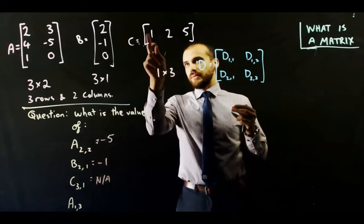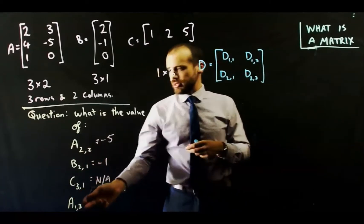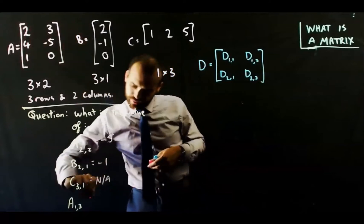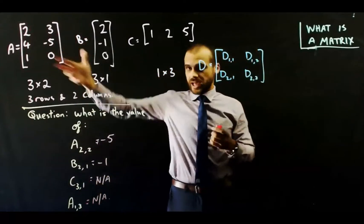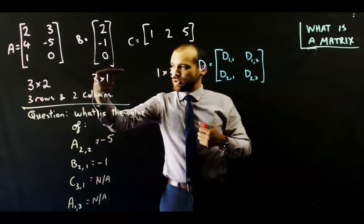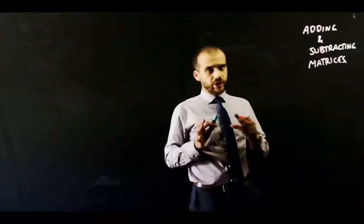And A 1,3, again, 1 row down, 3 columns across. That doesn't exist either. So you just need to be really careful when you're talking about those elements. Work down the rows and then across the columns.